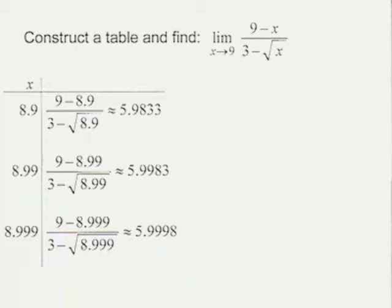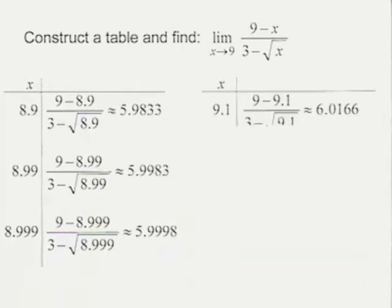Now we want to approach nine from the right. And we'll start by plugging in 9.1. As you can see, plugging in 9.1, wherever there's an X, we get approximately 6.0166.